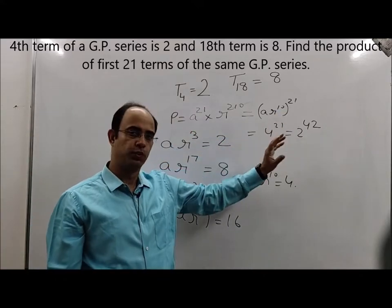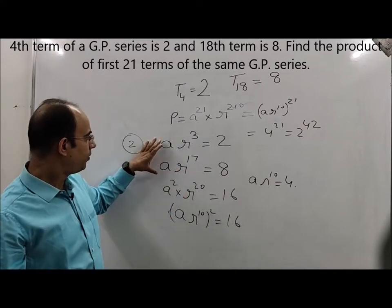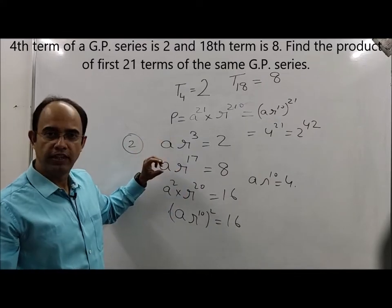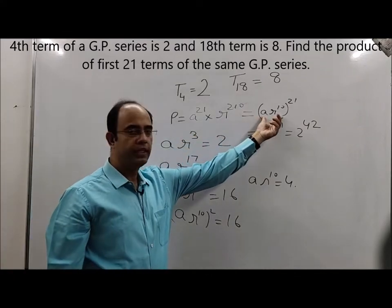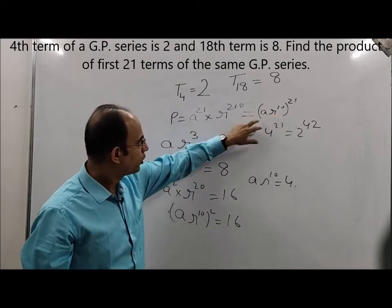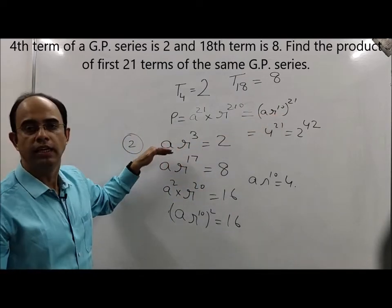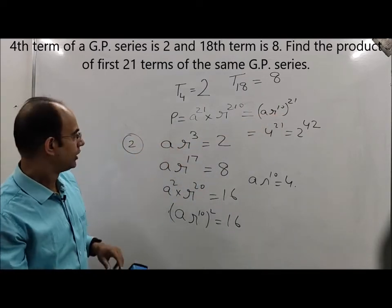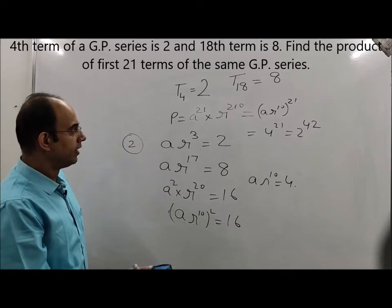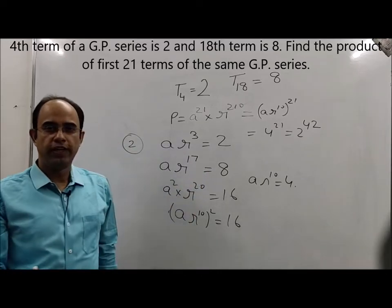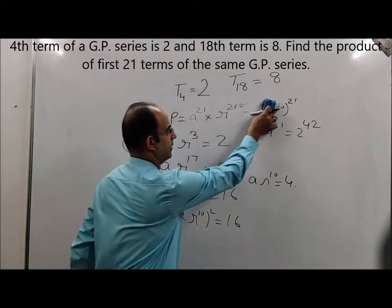By the second method also we get 2⁴². What we learn from here is that we need to be very observant about what exactly needs to be found, and then accordingly set up our equations. This is the second method. Now let us solve it by a third method.